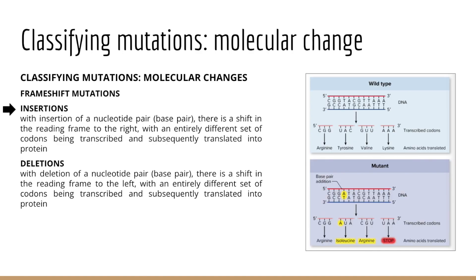Looking at frame shifts — why are they called frame shift mutations? Because the frame of triplet reading during translation is altered. A frame shift mutation occurs when any number of bases are added or deleted, except multiples of three, which would reestablish the initial reading frame. Frame shifts outside multiples of three cause a change in the amino acid sequence downstream from the insertion or deletion point, and we often see an early translation termination codon as well.